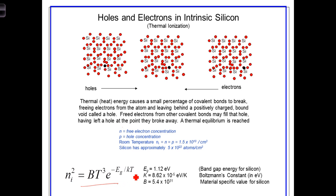where T is in degrees Kelvin, K is Boltzmann's constant in electron volts per degree Kelvin, and B is a material-specific parameter, and for silicon it's 5.4 times 10 to the 31st power.